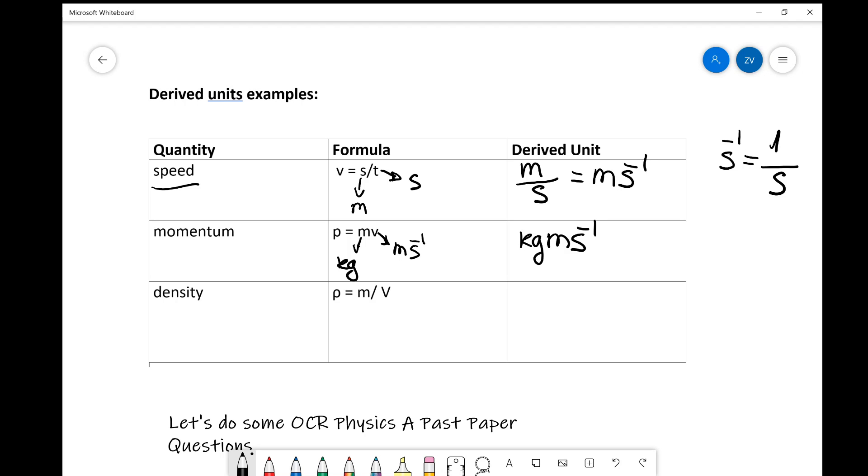Okay perfect. You're getting the idea hopefully. Let's do one more before we move on to some past paper questions. Let's have a look at the one for density. Density is mass per unit volume or mass divided by volume. So let's apply the same procedure. Mass is measured in kilograms. Volume, I'm sure you remember from GCSE physics and maths, is measured in cubic meters.